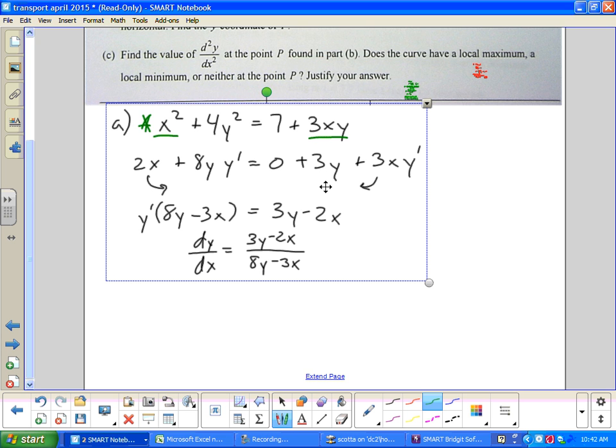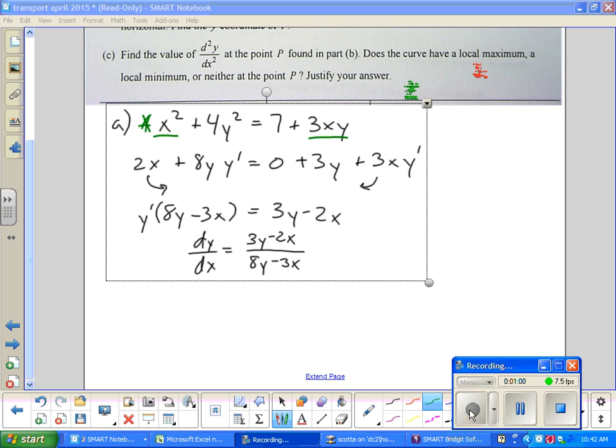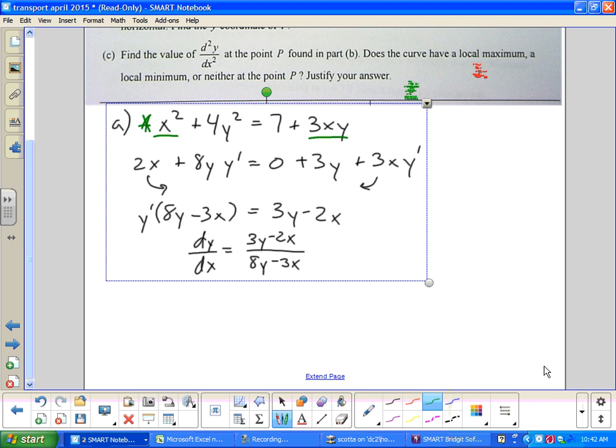Then we have to do the product rule. So I always use derivative of x first. So if the derivative of x is 1, you end up at 3y. The derivative of y is 1, y prime. So you get that.